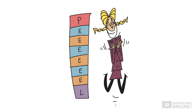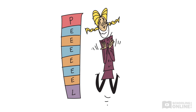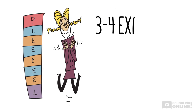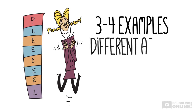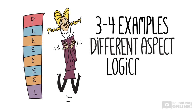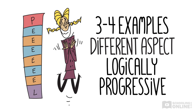So that's how we build upon our basic PEEL structure and begin writing full-length essays. To recap, in each paragraph we stretch out our PEEL analysis to include three to four example and explanation blocks. We ensure each example proves a different aspect of our point, and we order our examples in a logically progressive way.